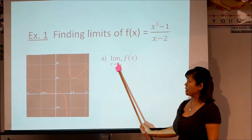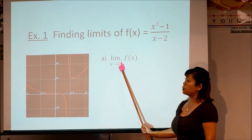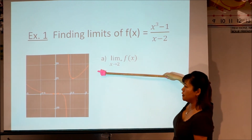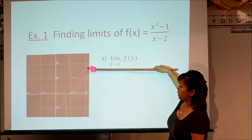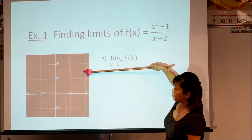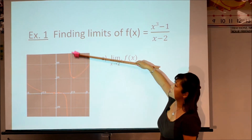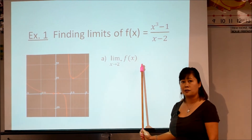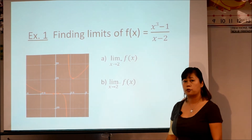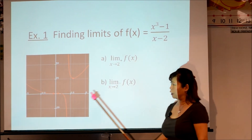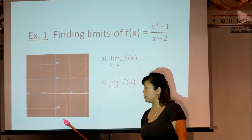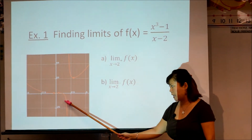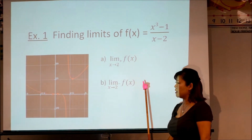The first question asks for the limit as X approaches 2 from the right-hand side. Coming from the right of the vertical asymptote at 2, we follow this function approaching 2, and it shoots upward. The Y value in this case is positive infinity. For the limit as X approaches 2 from the left-hand side, we take the graph on the left side of 2 — approaching 2, it shoots downward — so the Y value is negative infinity.